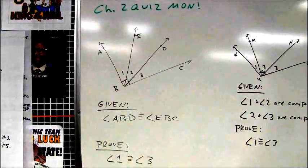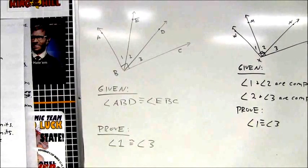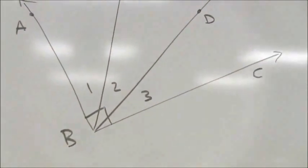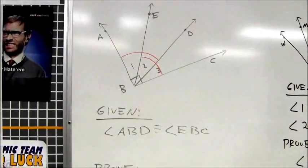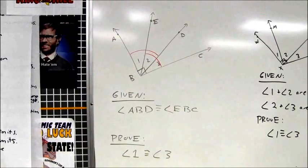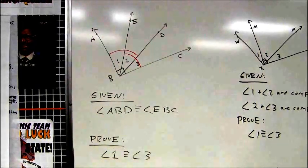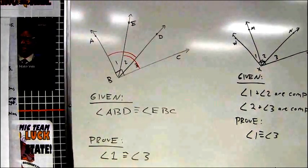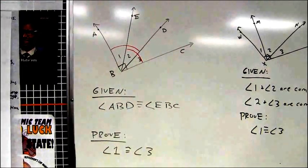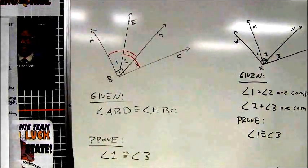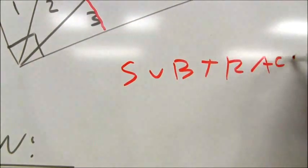Picking up with the next problem, I have several angles here. I'm told that angle ABD is congruent to angle EBC, and I want to prove that angle one is congruent to angle three. Mark the two angles that are congruent to each other — notice those two angles are overlapping. To isolate angle one and angle three, all you need to do is remove angle two from both of them. If I have two equal angles and I remove the same angle from both, that's the subtraction property. I'm subtracting angle two from both and I'm left with my final answer.